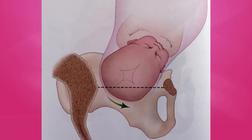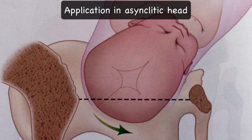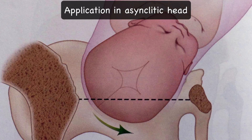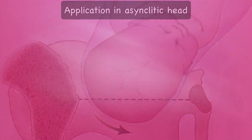Application of Kielland's forceps in an asynclitic head position requires some modification. In anterior parietal presentation, the posterior blade has to be introduced very deep into the pelvic cavity so that on locking, the blades and the handles are not at the same level. The converse is true for posterior parietal presentation.